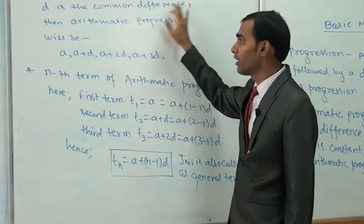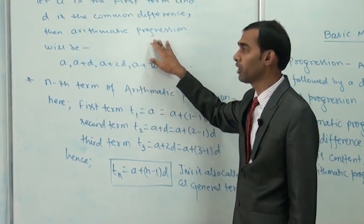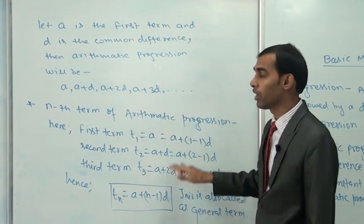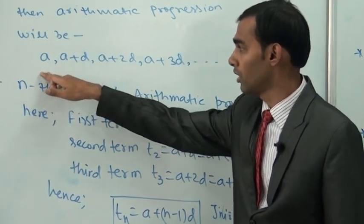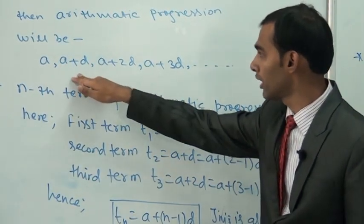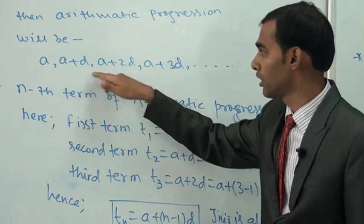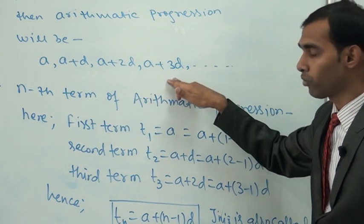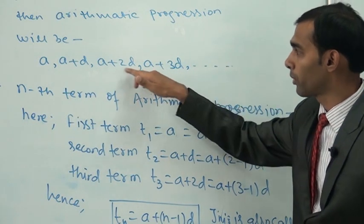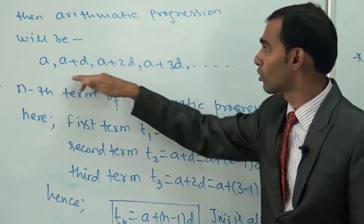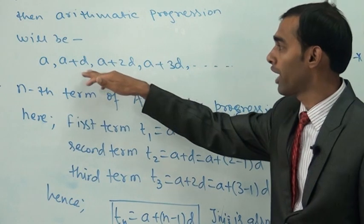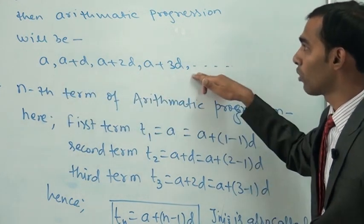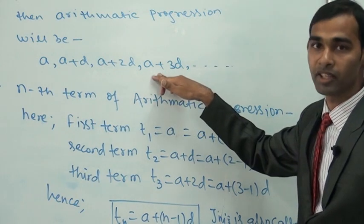Let a be the first term and d be the common difference. Then the arithmetic progression will be: a, a+d, a+2d, a+3d, and so on. The difference between the first two terms, (a+d) - a = d. The difference between the second and third terms, (a+2d) - (a+d) = d. The difference between the third and fourth terms, (a+3d) - (a+2d) = d. So the difference is common and constant, equal to d. This series is called arithmetic progression.